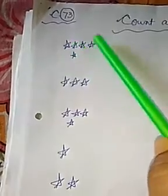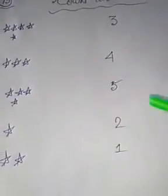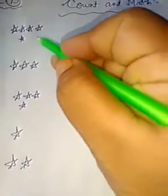Count the stars: 1, 2, 3, 4, 5. Where is 5? This is 5. So you have to match it.